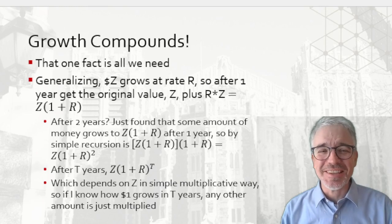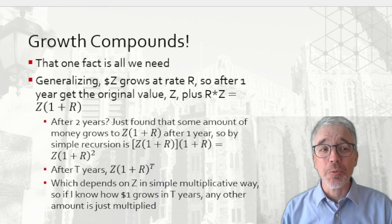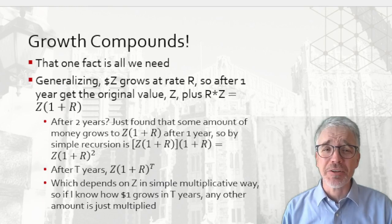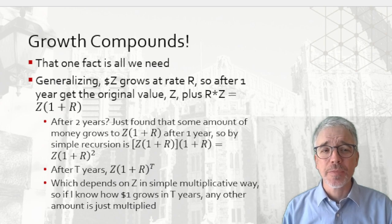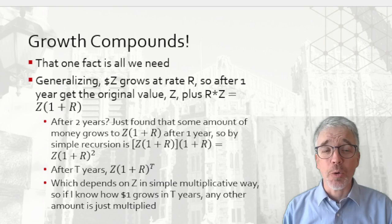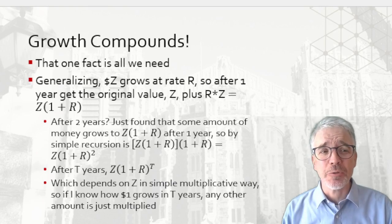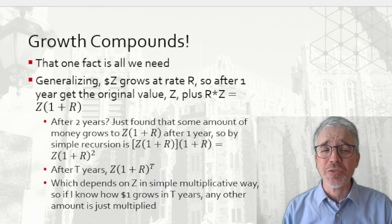Start with Z dollars, and that's going to grow at a rate R. Where the problem might set Z as $10 million in GDP, or Z as $500 in the bank, and R could be 5% or could be something else. So Z dollars growing at a rate R. What is that going to be after one year? That will increase by that percent. So in our formula, that's R times Z, and I have the original value Z. So after one year of growth, I have Z times (1 + R) dollars.